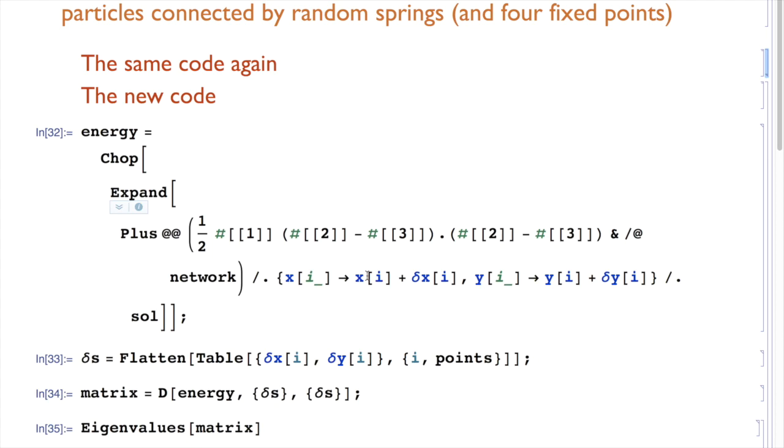Once we made that expansion, of course, since we are at an equilibrium, the total potential should have no linear terms in the fluctuations. They should all be quadratic.